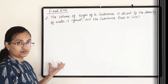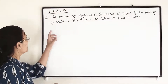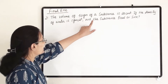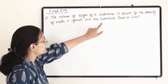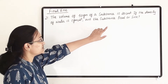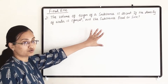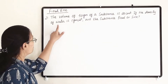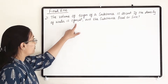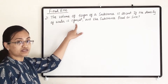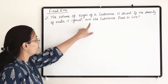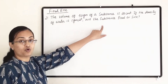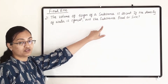Question number 21. The volume of 50 grams of a substance is 20 centimeter cube. If the density of water is 1 gram per centimeter cube, will the substance float or sink?